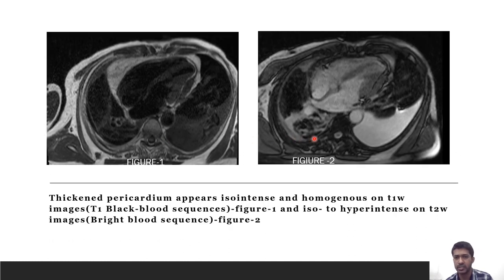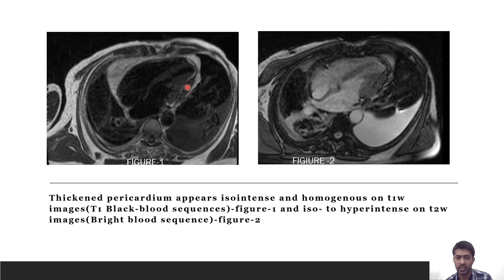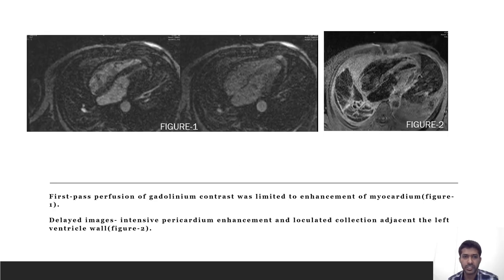These are the blackboard images and the bright plate images. On the blackboard images, there is generalized thickening of the pericardium and the loculated collection along the left ventricle cavity, which appears T1 iso-intense and T2 hyperintense relative to the myocardium. Post-injection first-pass perfusion images show enhancement of the myocardium; however, no enhancement of the pericardium or the collection is noted.